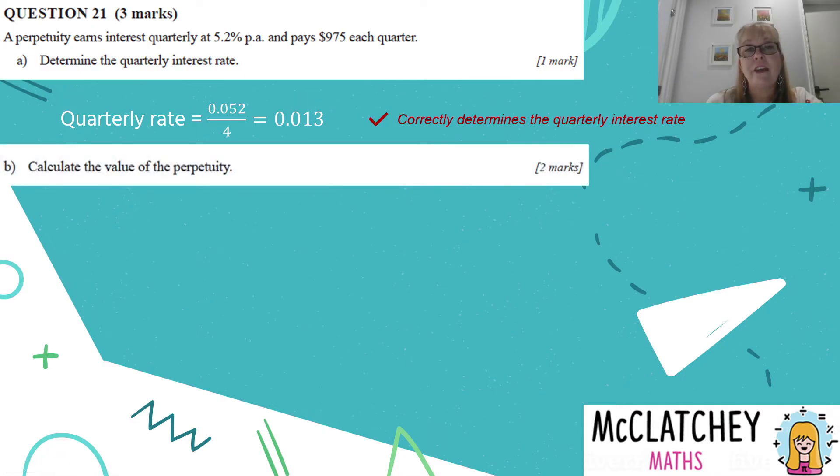Part B, calculate the value of the perpetuity. This is worth two marks. If you're joining us from 2019 syllabus, you won't get a perpetuity formula on your formula sheet. However, if you are joining us from the 2025 syllabus, you get a formula, which is fantastic. Those of you doing the exam in 2024 would have had to memorize the formula. And this is what the formula looks like. A is the amount of the perpetuity, M is the amount of the payment per period, and i is the interest rate per period. So we've got 975 from our question. We've just worked out the interest rate from here. So now I've got my formula, I've got my variables. Let's substitute those in. And I'm going to work out that the perpetuity's value is $75,000.